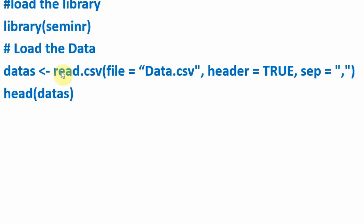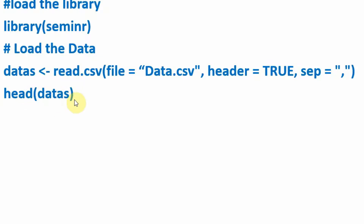To load the data, you call the read.csv function. The arguments it takes are the file name, the header — in this case, yes, there is a header with the variable names — and then the separator is comma. Note the brackets open and close. Then you read the data object to make sure the data has been identified and loaded properly.